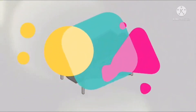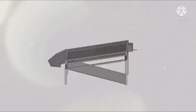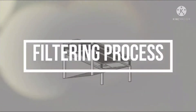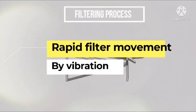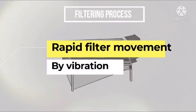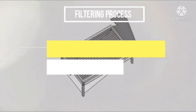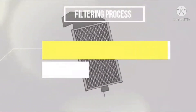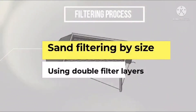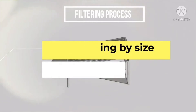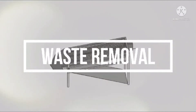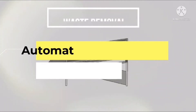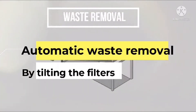Now let's discuss why this design was selected by breaking down the main functions of the machine. One of the main functions is the filtering process — rapid filter movement is necessary for filtering sand, achieved here by vibration. The next part is separation according to particle size, where two nets separate two different sizes of sand. The next key function is waste removal, accomplished by tilting the filters.